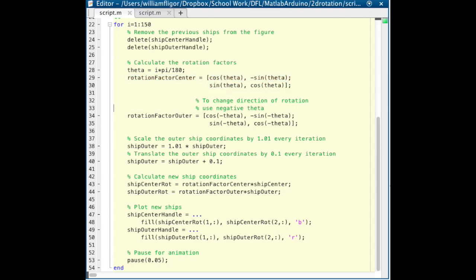Calculate the rotation vectors using the rotational matrix. To change the direction of rotation for the outer ship, we use negative theta.